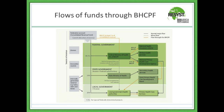The difference between the flow of funds in this Basic Healthcare Provision Fund and the normal flow is that the 1% comes directly from the federation account — bypassing the usual route through the federal government — going straight to the Federal Ministry of Health and then to the state ministries of health as well as local governments. It creates a different flow of funds as opposed to the usual flow.